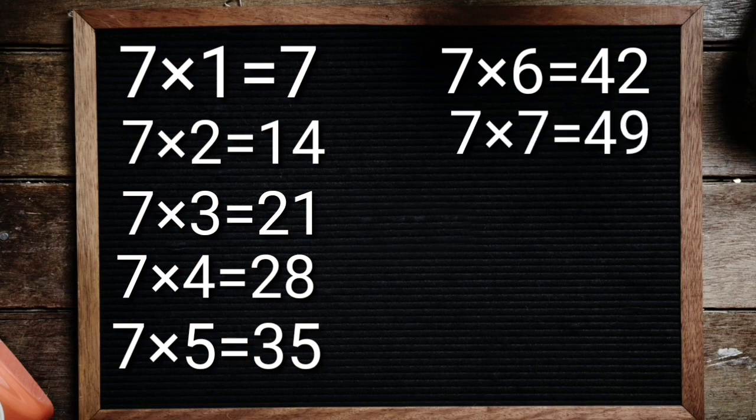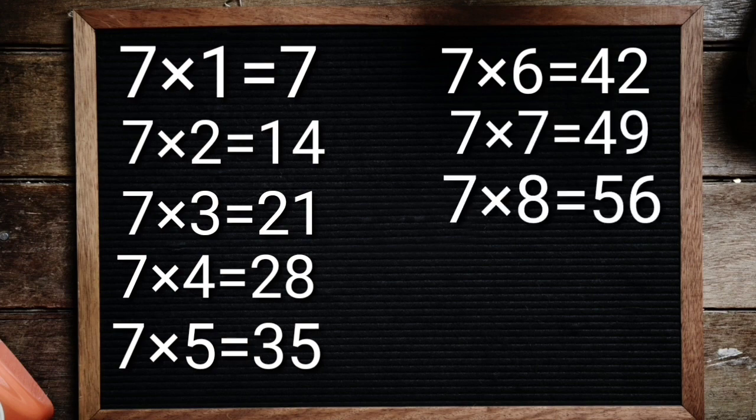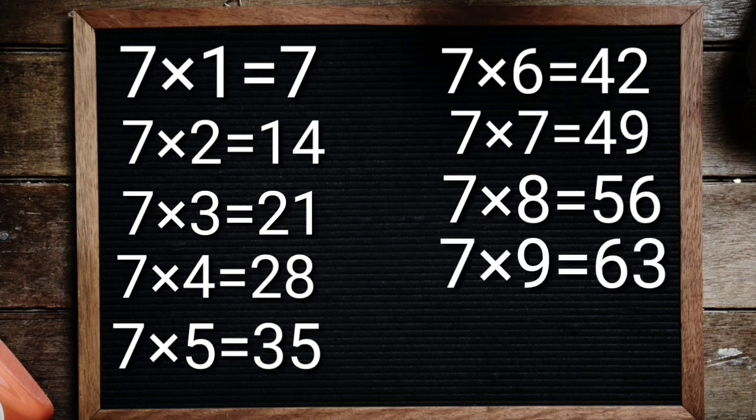7 7's are 49, 7 8's are 56, 7 9's are 63, 7 10's are 70.